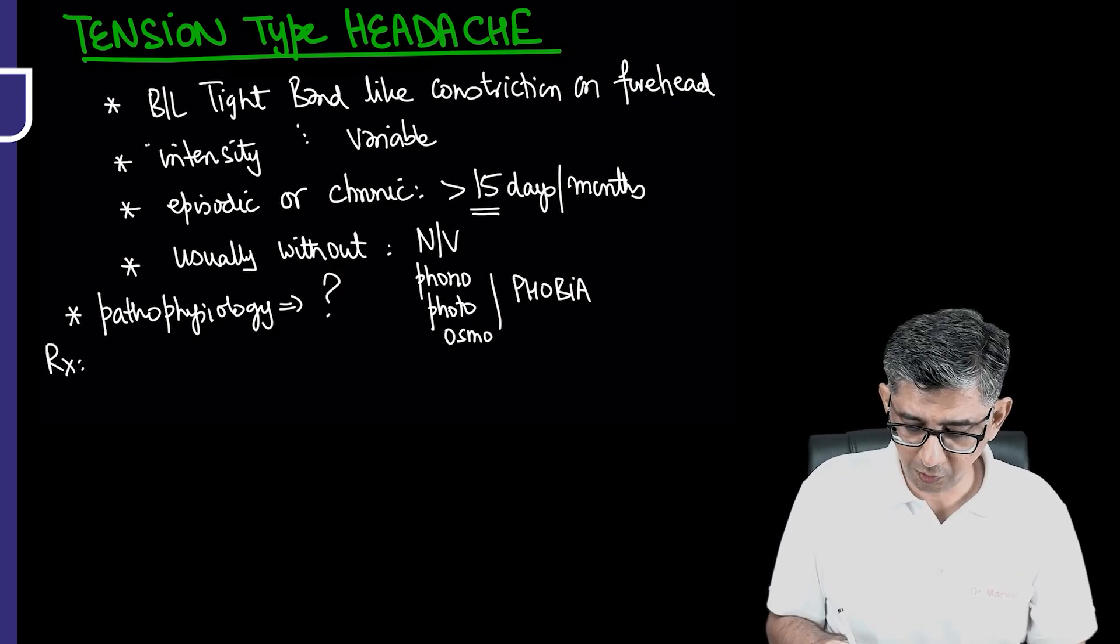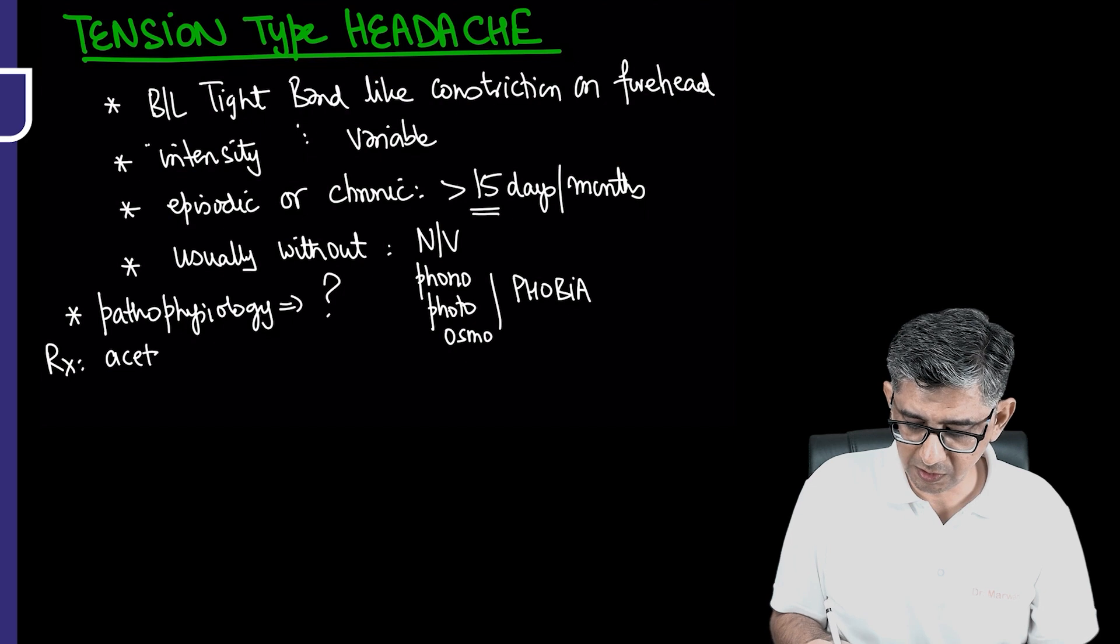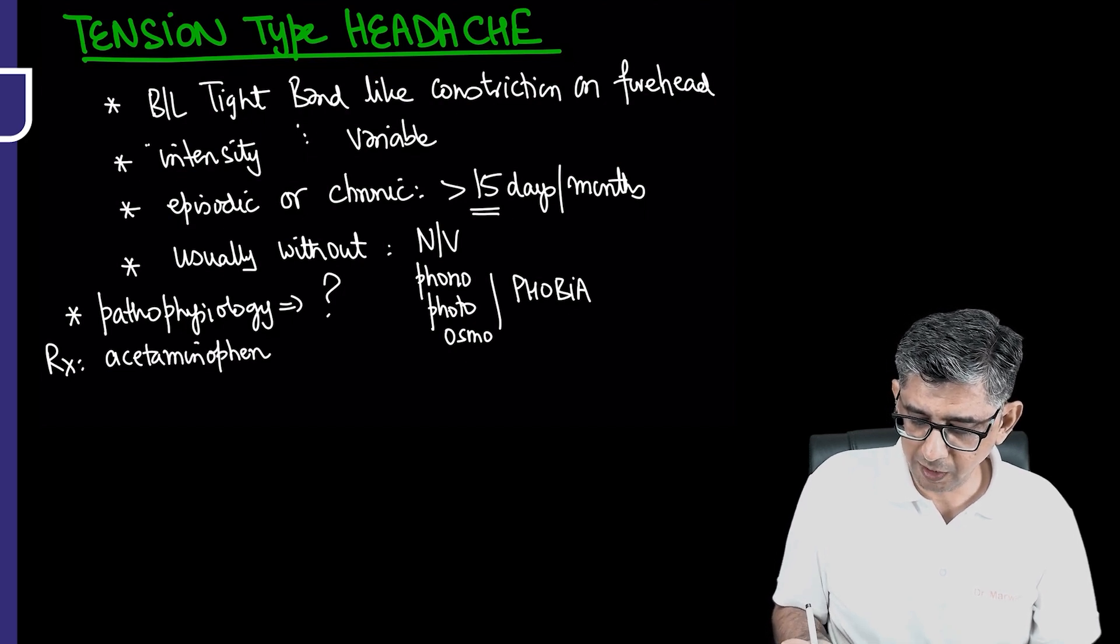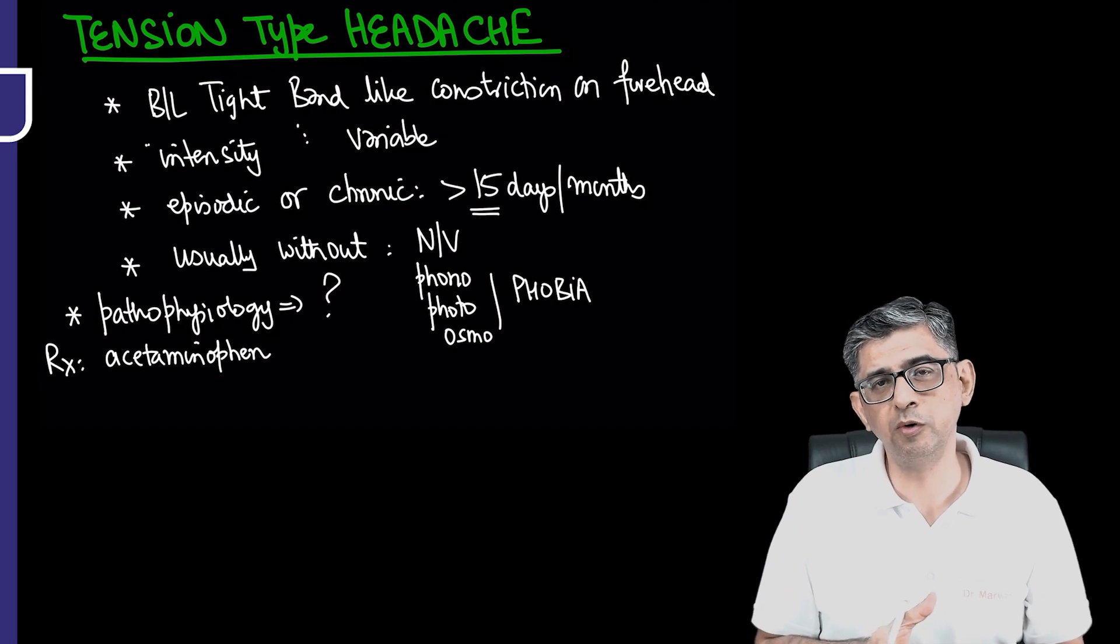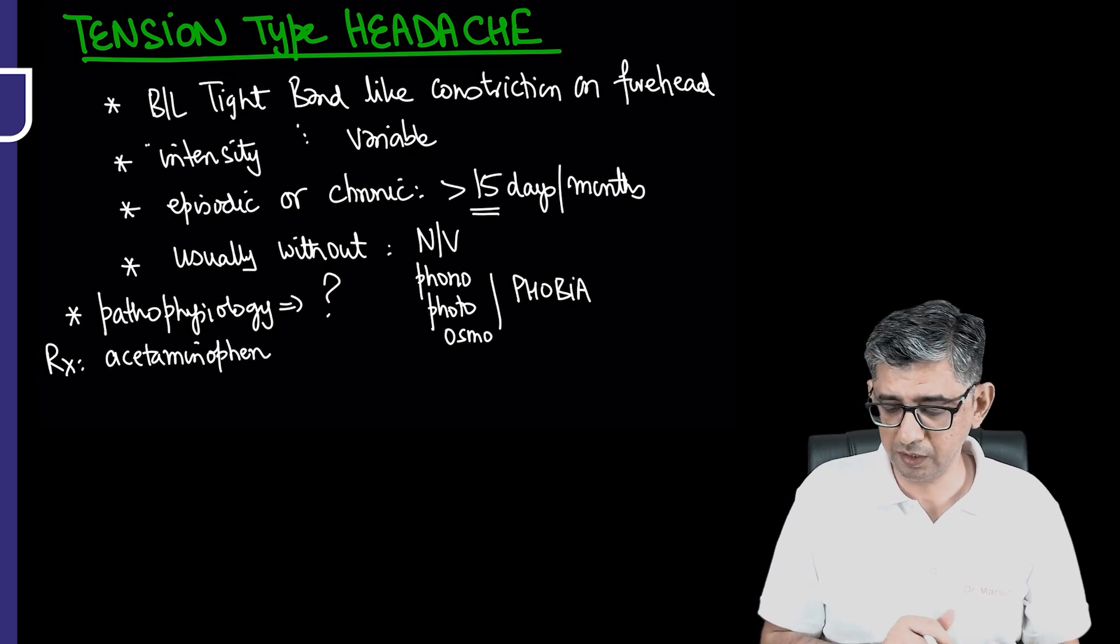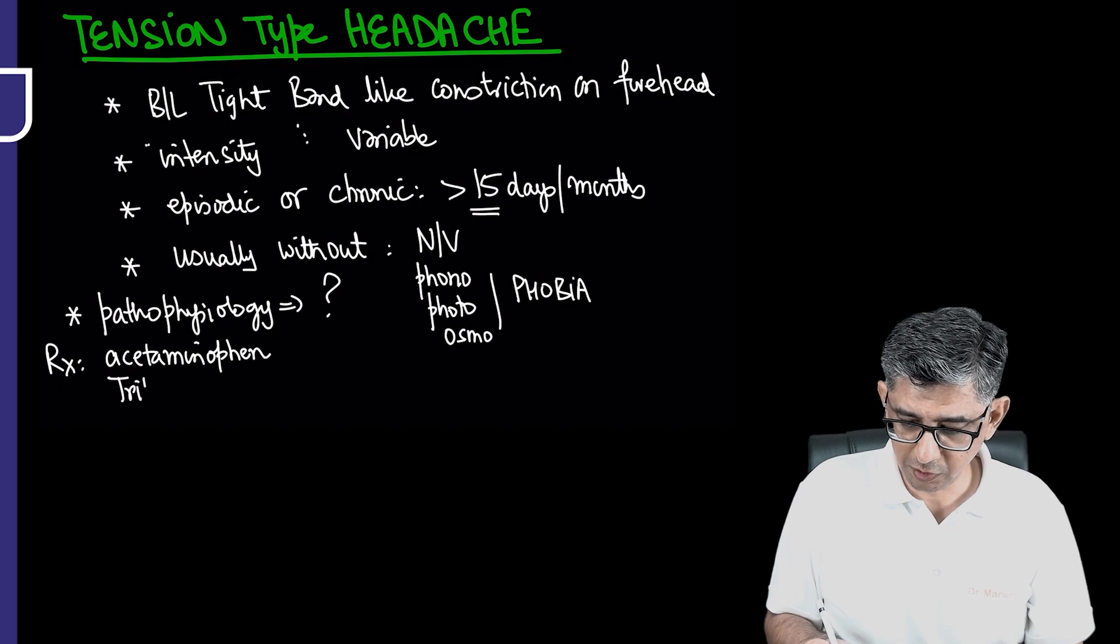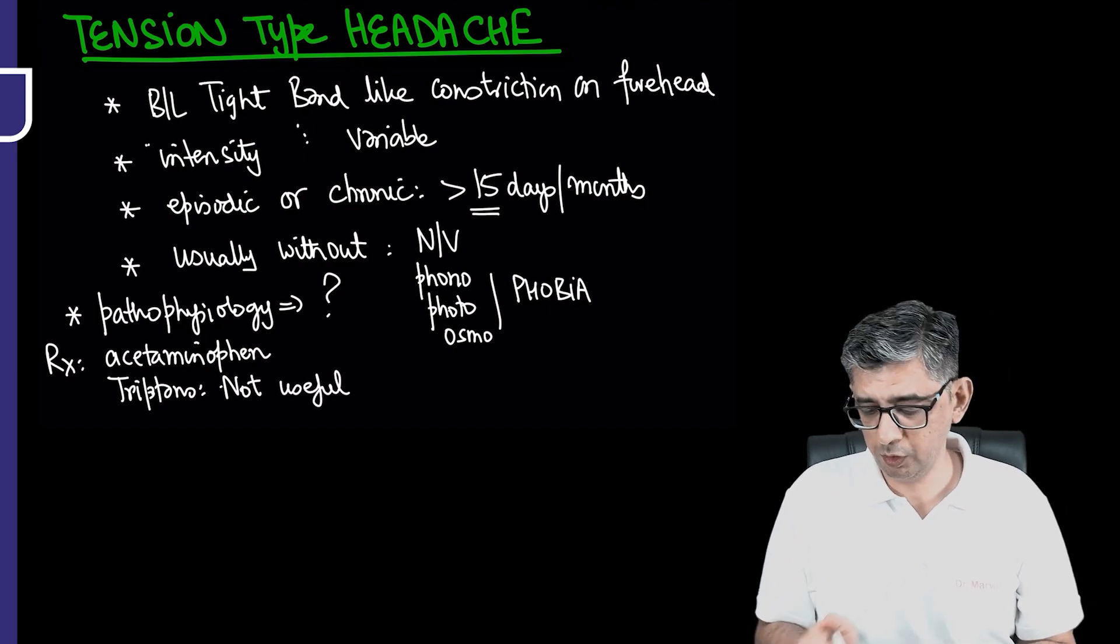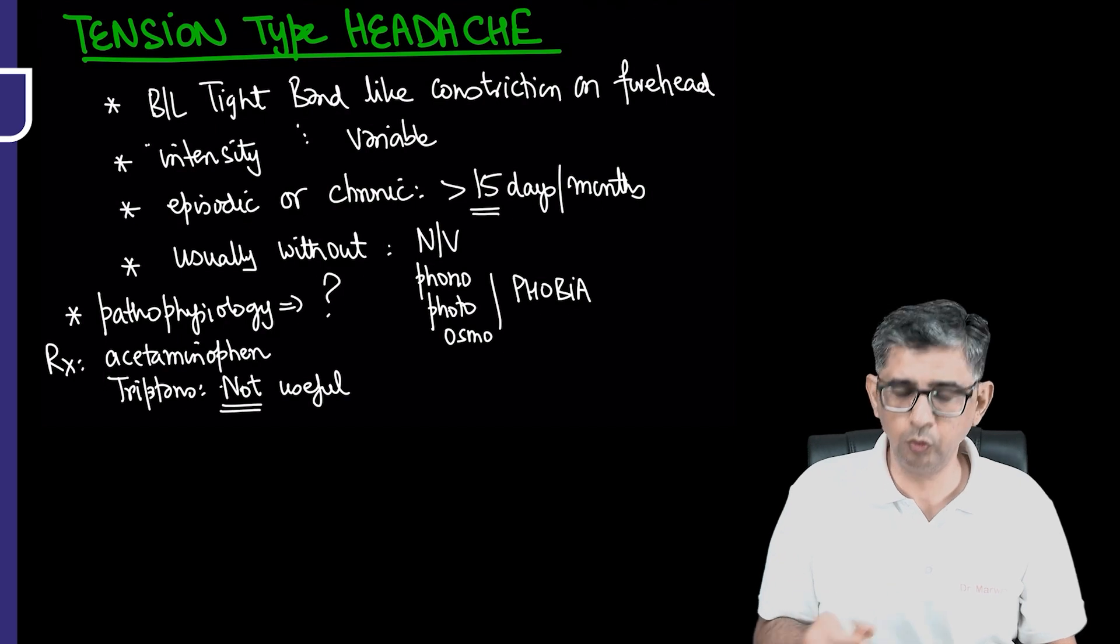As far as management of an attack of tension type headache is concerned, a lot of patients may be doing self-medication by buying over-the-counter painkillers and it would be working in majority of cases like acetaminophen. If we give tryptans to patients having tension type headache, we will find that tryptans are not useful during an attack for abortive treatment.